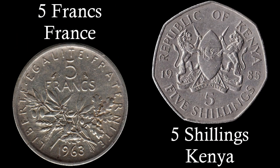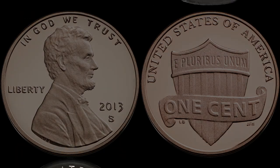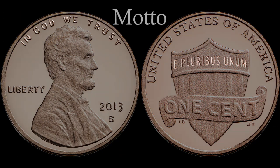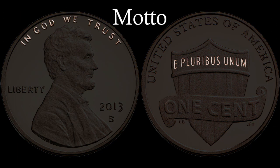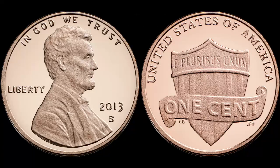Many countries put their national motto on their coins as well. The US is unusual in that it puts two mottos on its modern coins. Dates, mint marks, and assayer marks have been on coins for over 1,000 years.